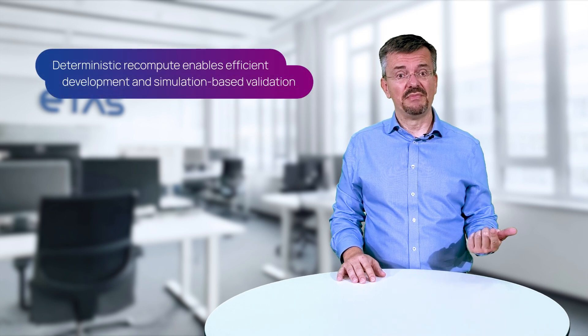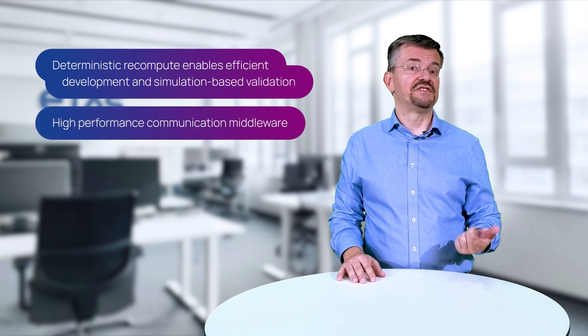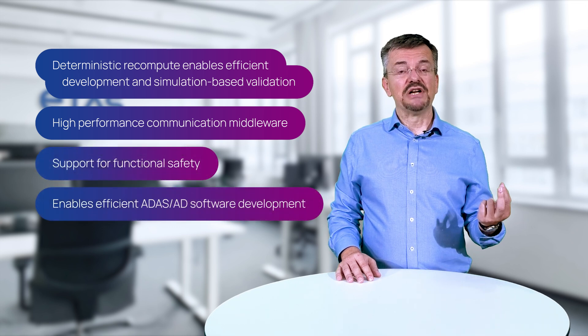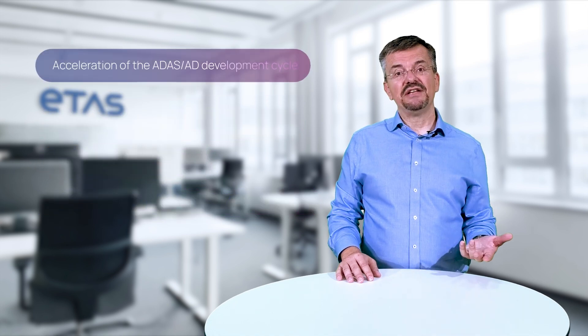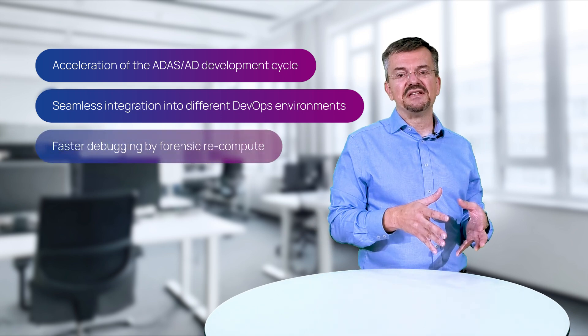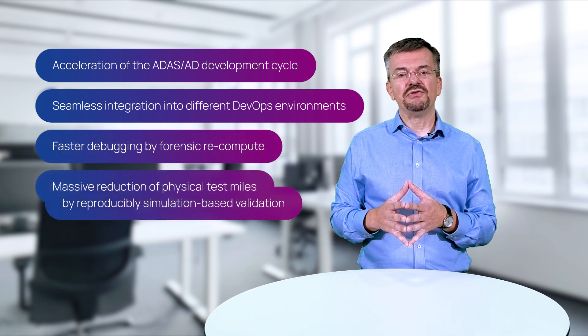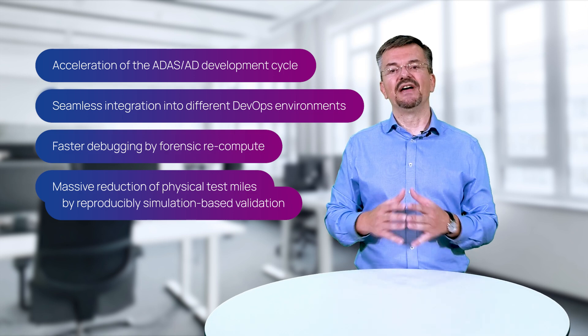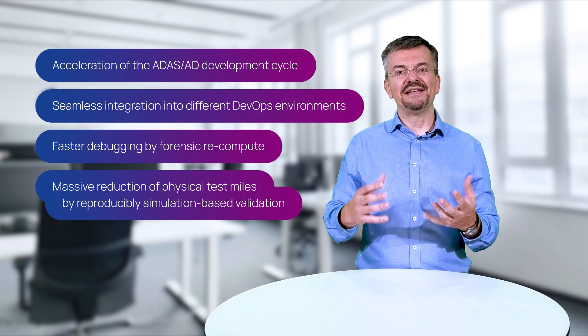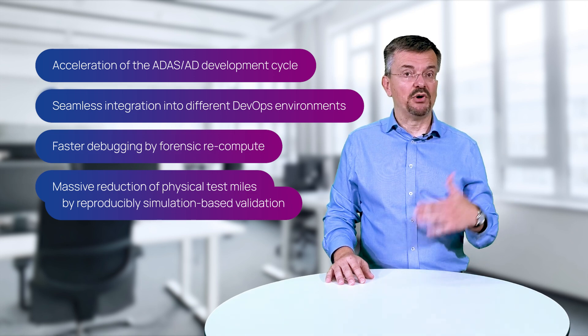Let me finish this presentation by summarizing the major points. The main benefits you get are: a deterministic recompute, which is important for development; high performance communication, which is important for your high bandwidth sensor data; and support for functional safety requirements up to ASIL D. As a result, you can accelerate your development cycle, seamlessly integrate the middleware solution into your available development environment, go for faster debugging, and massively reduce the number of physical test miles by using simulation-based validation. All in all, our middleware solution provides a way of making your ADAS and AD development more efficient and avoiding the ketchup bottle problems for your system.